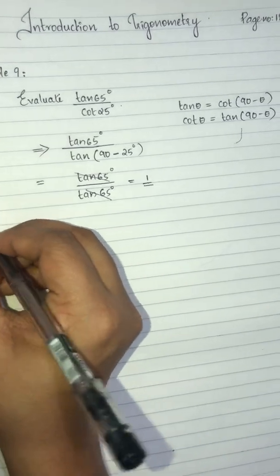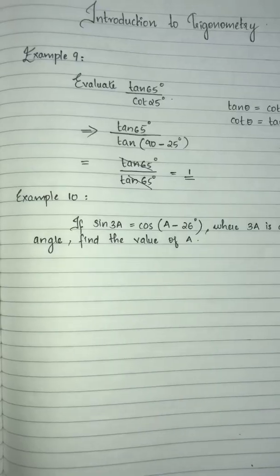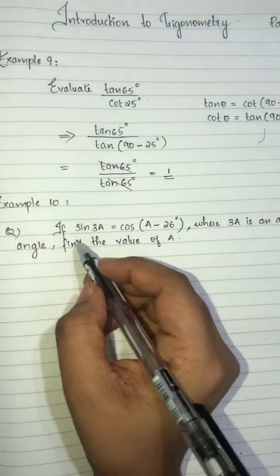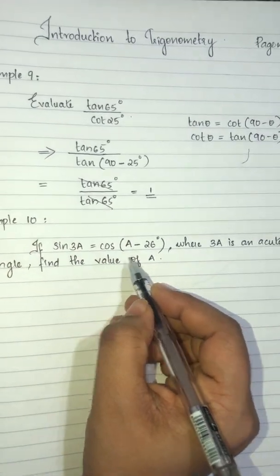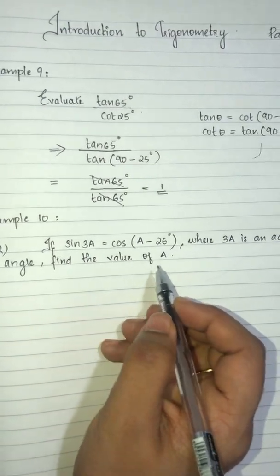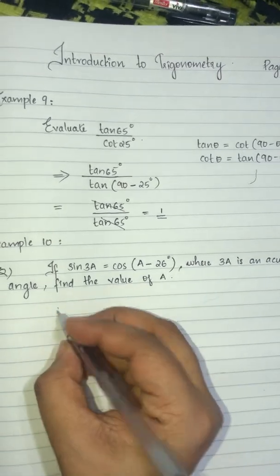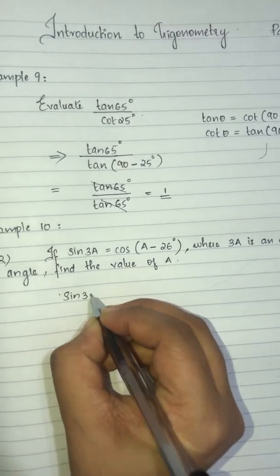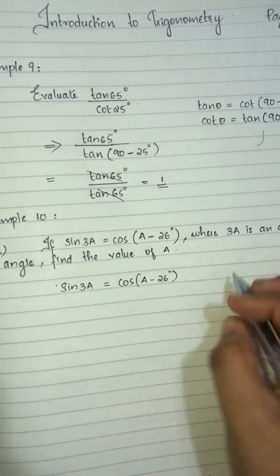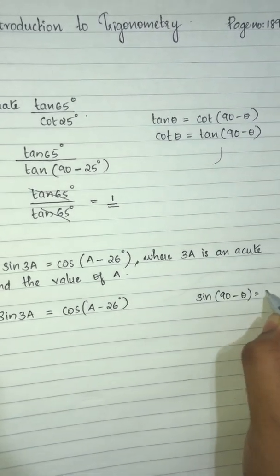Next one, example 10. The question is: if sin3a is equal to cos(a-26), where 3a is an acute angle, find the value of a. Now, 3a is an acute angle. And sin3a is equal to cos(90-26). We know that sin(90-θ) is equal to cosθ.